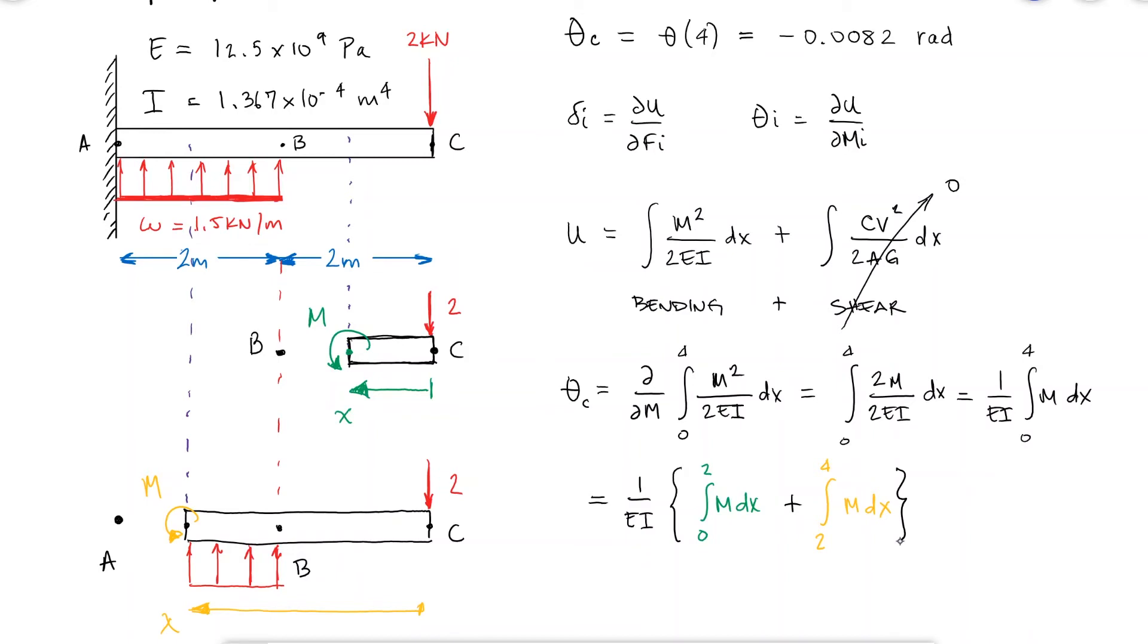And notice that when using Castigliano's theorem, your x equal to zero starts at where you're calculating either the deflection or the angle, in this case C.